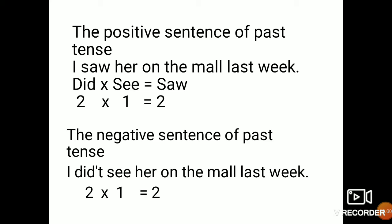Now for the negative: 'I didn't see her at the mall last week.' Do we have the same 'did' on the negative sentence? Yes. Both in positive and negative we have 'did,' and 'see' has the value of one. So we have the same mathematical concept: two times one equals two. On the negative, you just add 'not' after 'did,' or use 'didn't.'